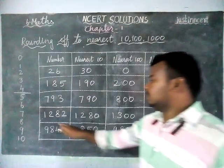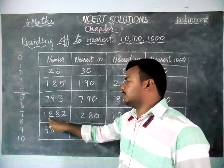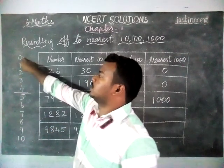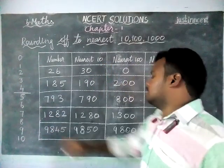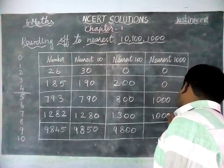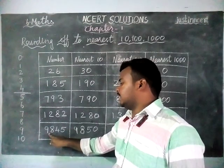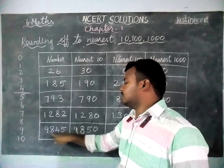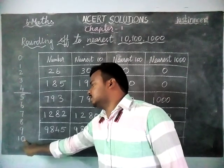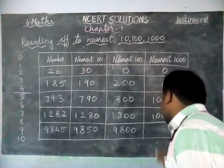For 1282, the hundreds place is 2. Since 2 falls in the 1–4 range, we choose the previous 1000, which is 1000. For 9845, the hundreds place is 8. Since 8 is in the 5–9 range, we choose the next 1000, which is 10,000.